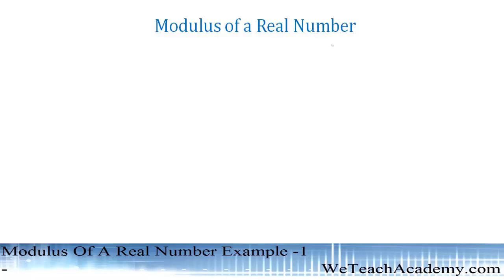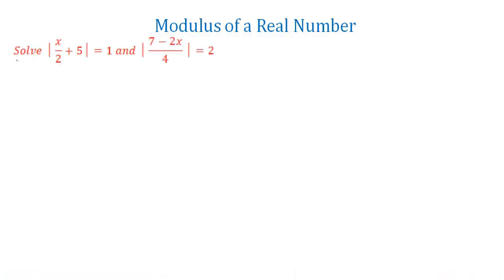We have two equations to solve. The first equation is mod(x/2 + 5) = 1, and the second equation is mod((7 - 2x)/4) = 2.